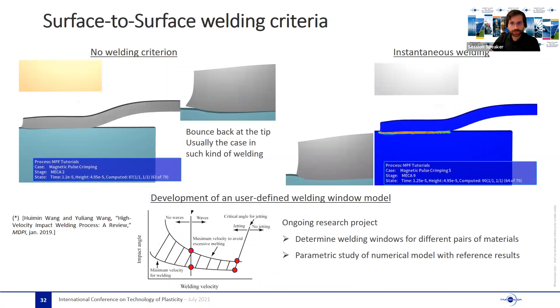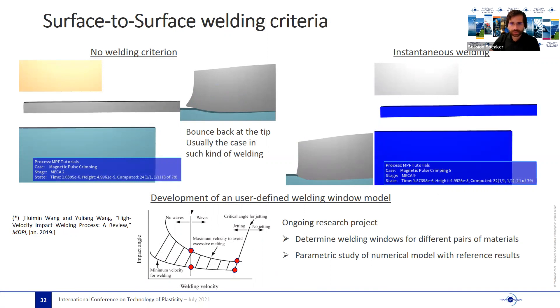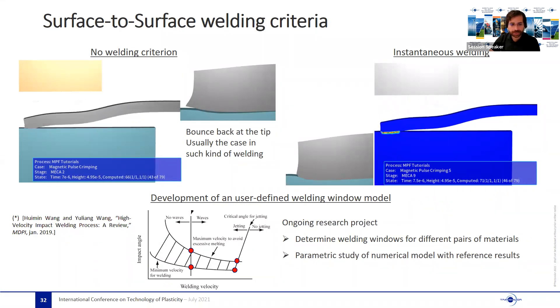In order to open this door from the simulation standpoints, we started by simply enabling the simulation of the forming process without taking into account any welding criteria. This was done thanks to the automatic time stepping. Next, we introduced the possibility of enabling surface-to-surface welding, as shown in this example. We simply enable an instantaneous weld during contact.